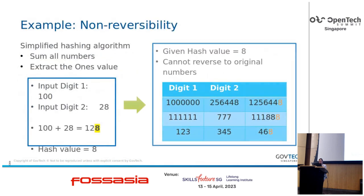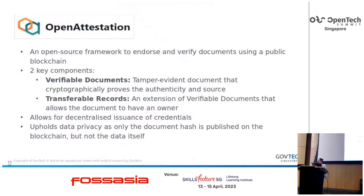Open Attestation is an open source framework to endorse and verify documents. We have two key components. The first is verifiable documents — tamper-evident documents that cryptographically prove the authenticity and source of the document. You can think of credentials like academic qualifications, proof of identity, and proof of employment. We also look at transferable records, similar to verifiable documents, but these are documents that can have an owner and usually confer ownership of assets — such as title deeds or a bill of lading.